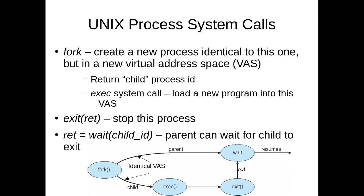This feels like a very different type of function because it kind of returns twice and returns different things depending on which type of process it is. I want to emphasize this feels strange because we are executing fork mainly for the side effect of creating a new process. And because the new process is virtually identical except for the ID, we need some way to determine which process is returning from fork. That's why the return value is a great discriminator.